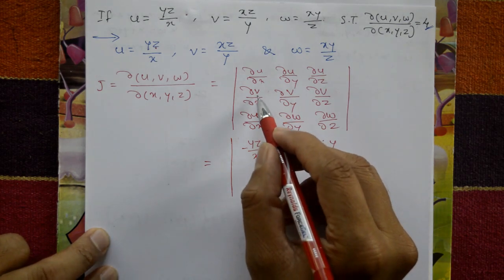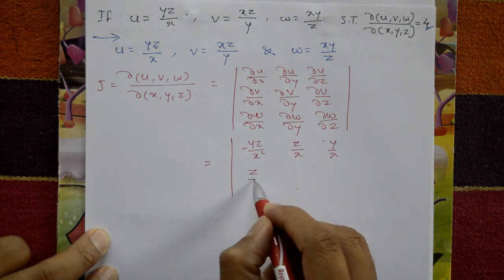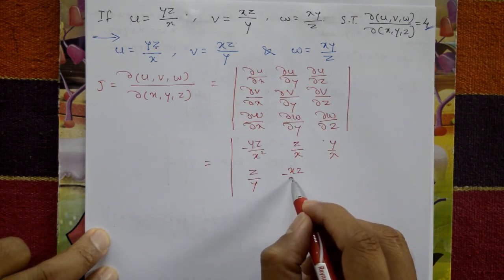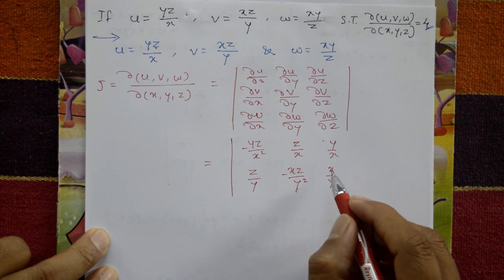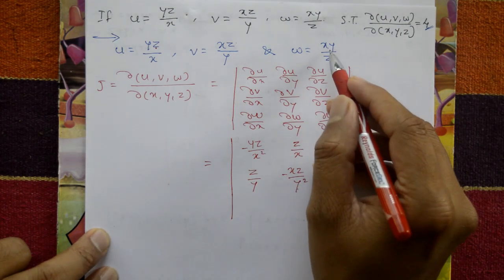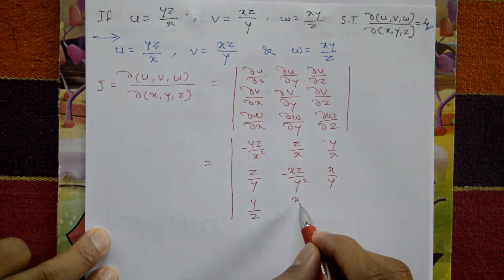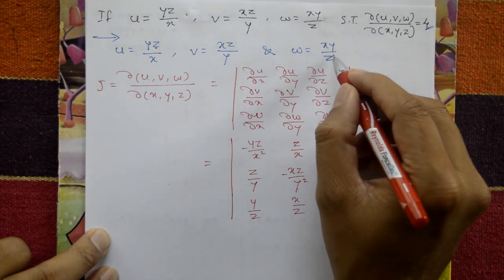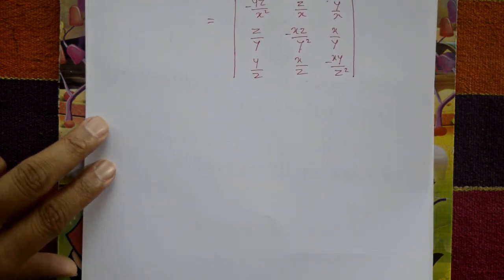For v: ∂v/∂x = z/y. With respect to y: xz is constant, so ∂v/∂y = −xz/y². With respect to z: x/y only. For w: ∂w/∂x = y/z. With respect to y: x/z. With respect to z: xy is constant, so ∂w/∂z = −xy/z². Simple differentiation.